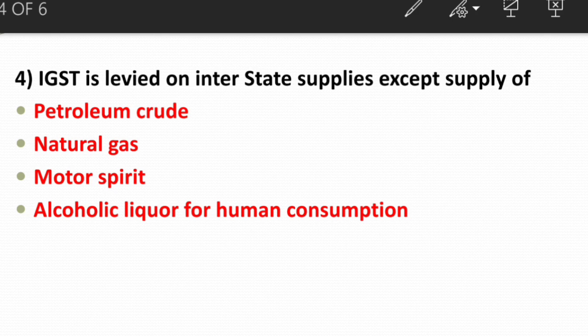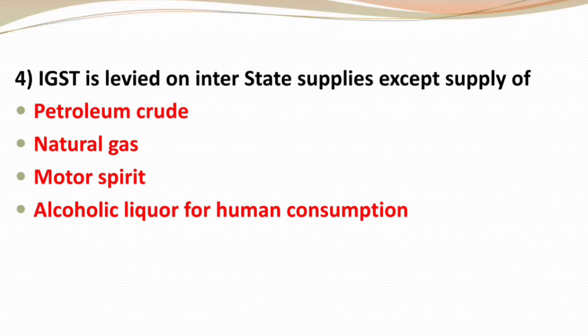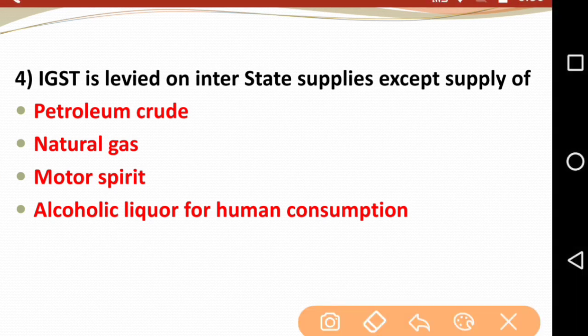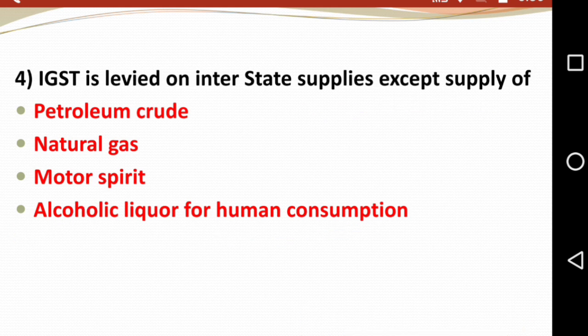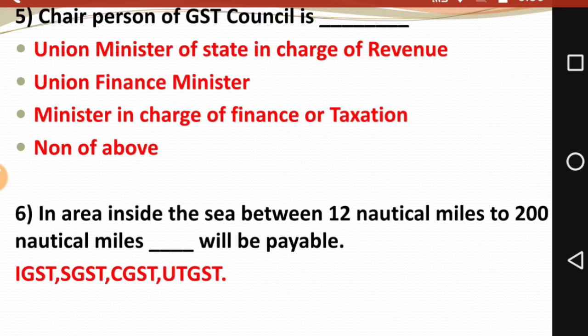Next question: IGST is levied on interstate supplies except supply of petroleum crude, natural gas, motor spirit, or alcoholic liquor for human consumption. The key word here is 'except.' The right answer is alcoholic liquor for human consumption.